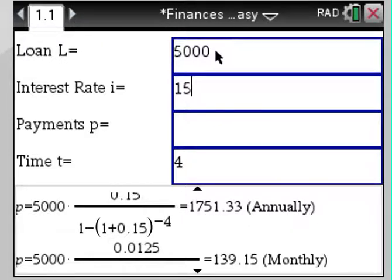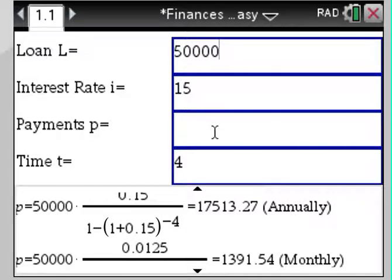You will see that you would have to pay $139 monthly, or if you pay annually would be $1,751. Notice the change. If the loan is not $5,000 but let's say it's $50,000, your monthly rate would be about almost $1,400 and annually $17,513. So this is a pretty cool loan solver that allows you to solve any loan questions right away.